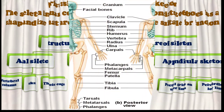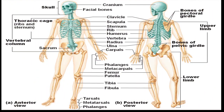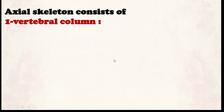This is a picture of the skeleton in the human body. The axial skeleton consists of the skull, the vertebral column, and the rib cage — these three parts are called the axial skeleton. The appendicular skeleton includes the pectoral girdle and upper limbs, and the pelvic girdle and lower limbs.